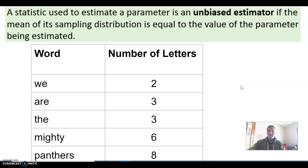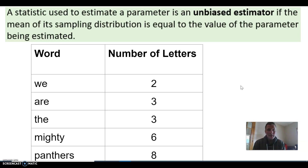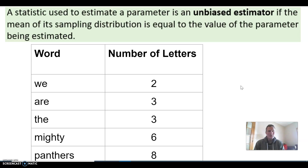A statistic is used to estimate a parameter. A parameter comes from a population — it might be the mean of the population or a proportion of the population. A statistic is then used to estimate that parameter, which is perhaps unknown.